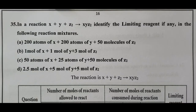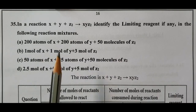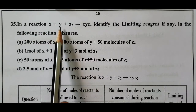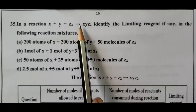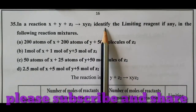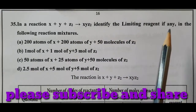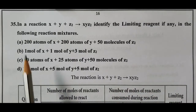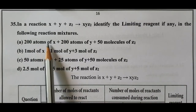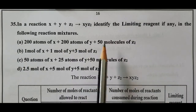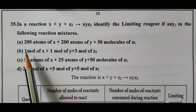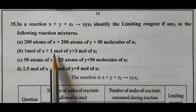Coming to problem number 35, which is the limiting reagent problem. In a reaction X + Y + Z2 → XYZ2, identify the limiting reagent in the following mixtures: (a) 200 atoms of X, 200 atoms of Y, 50 molecules of Z2. Since the ratio is 1:1:1, the lowest value is 50, so Z2 is the limiting reagent.